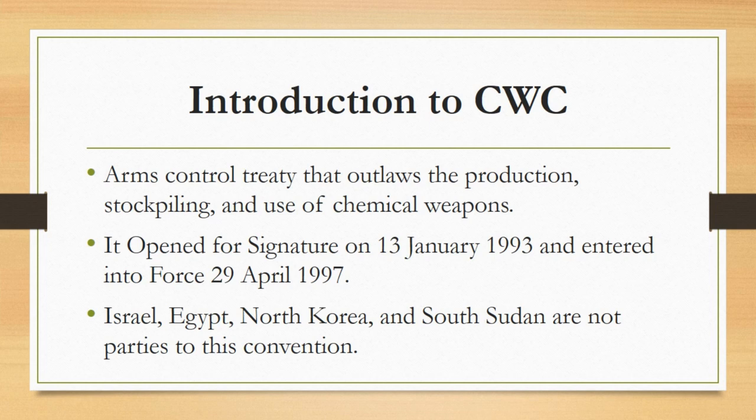The Chemical Weapons Convention is an arms control treaty that outlaws the production, stockpiling, and use of chemical weapons. This convention aims to eliminate an entire category of weapons of mass destruction by prohibiting the development, production, acquisition, stockpiling, retention, transfer, or use of chemical weapons by states parties.